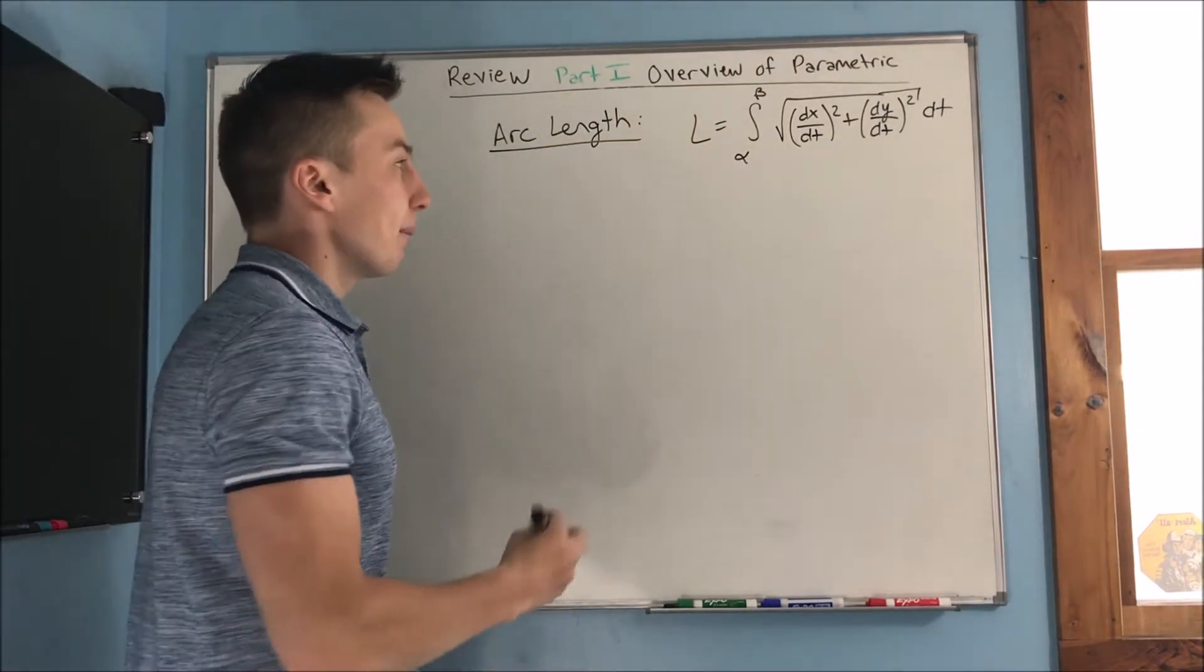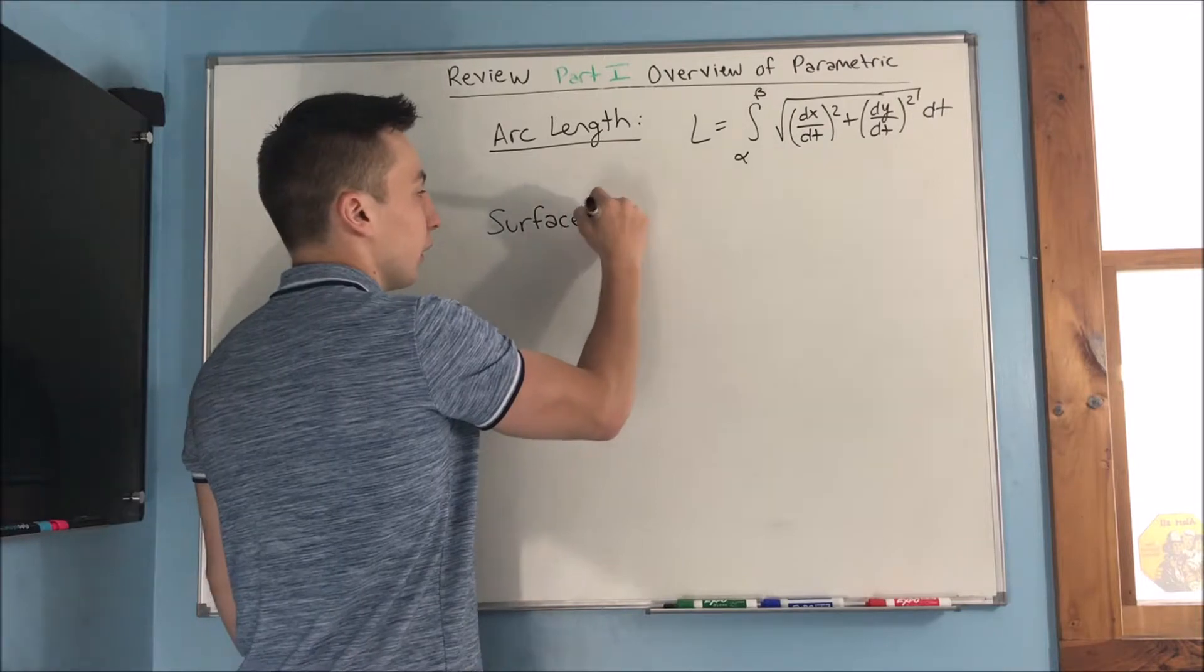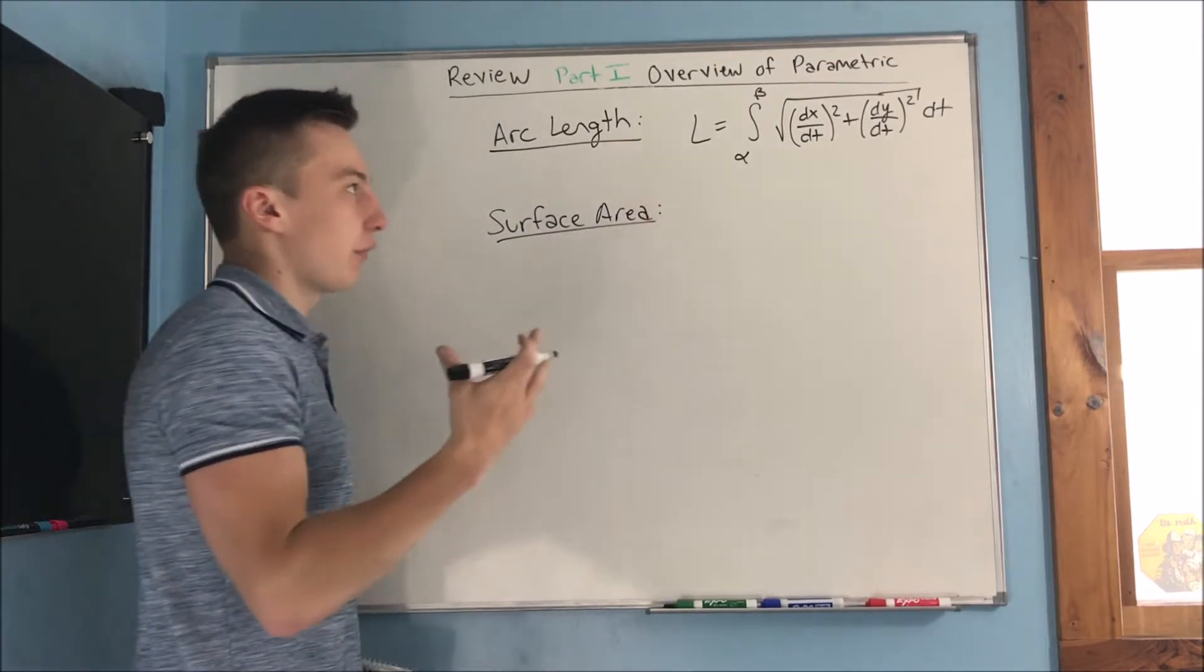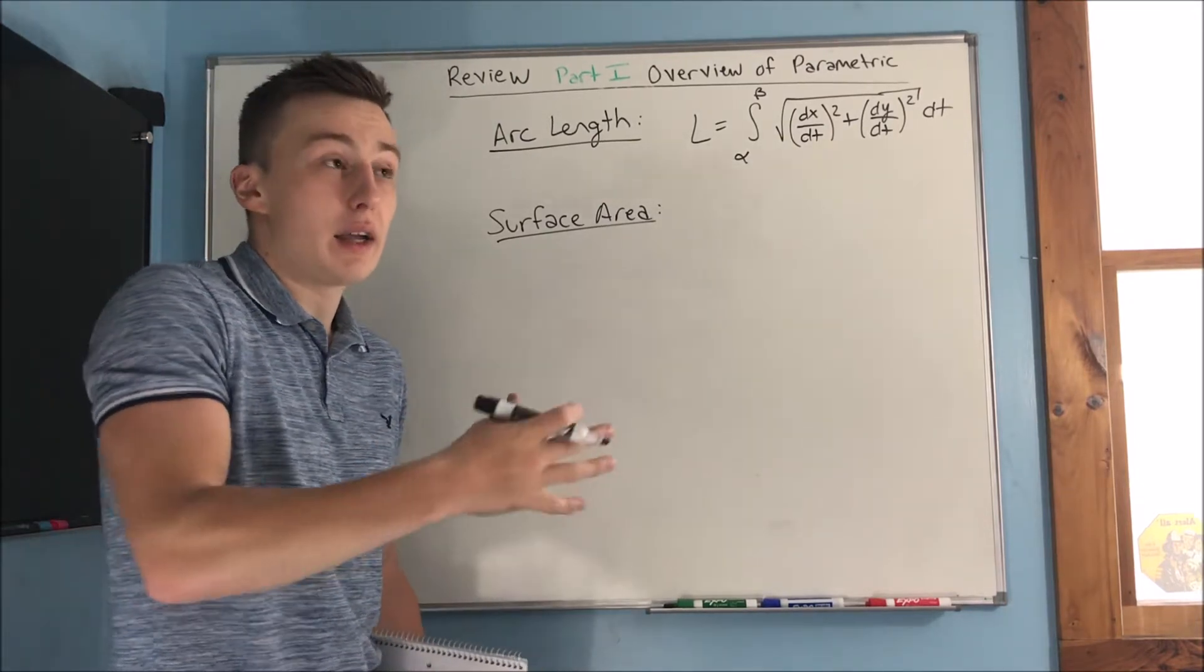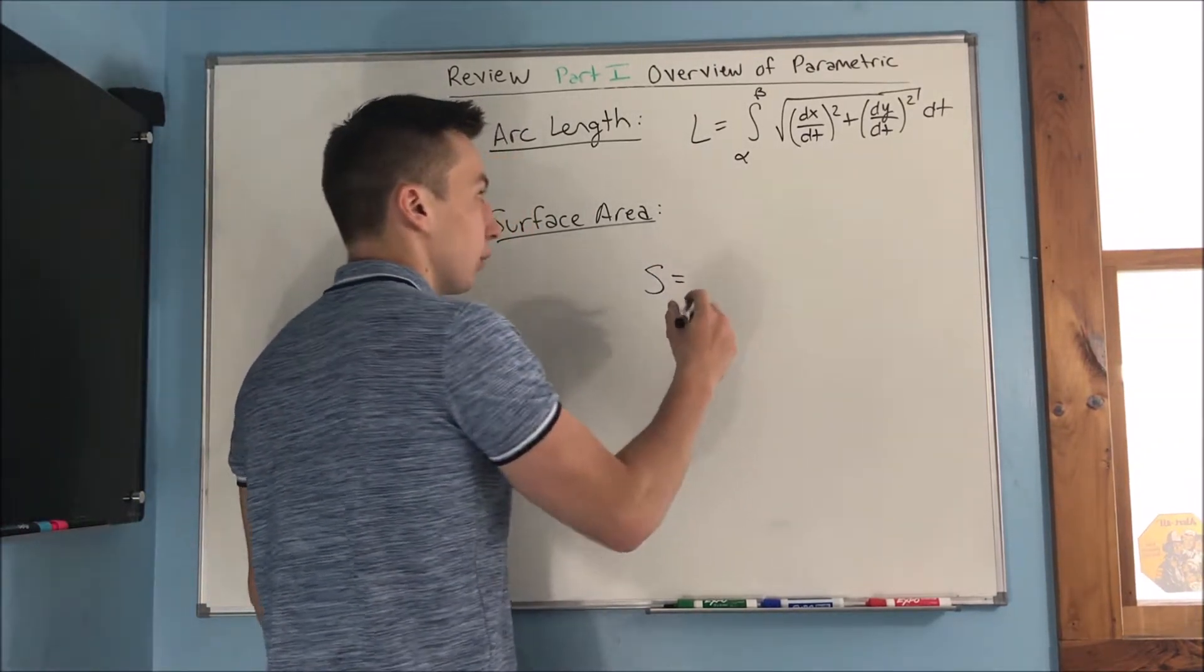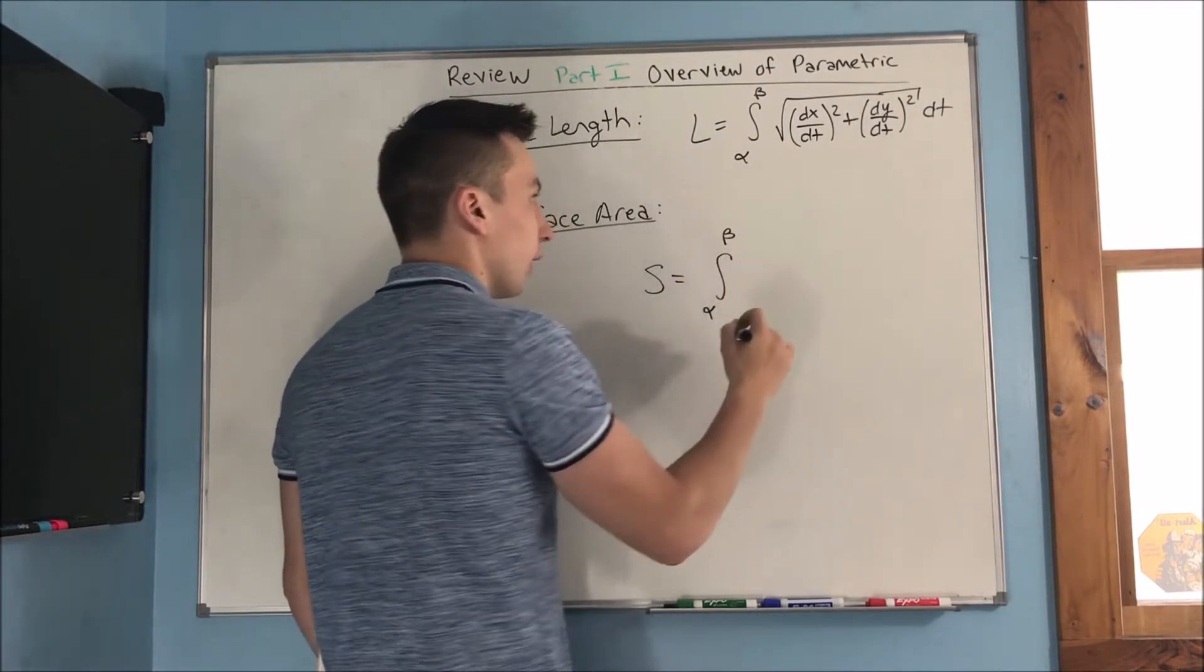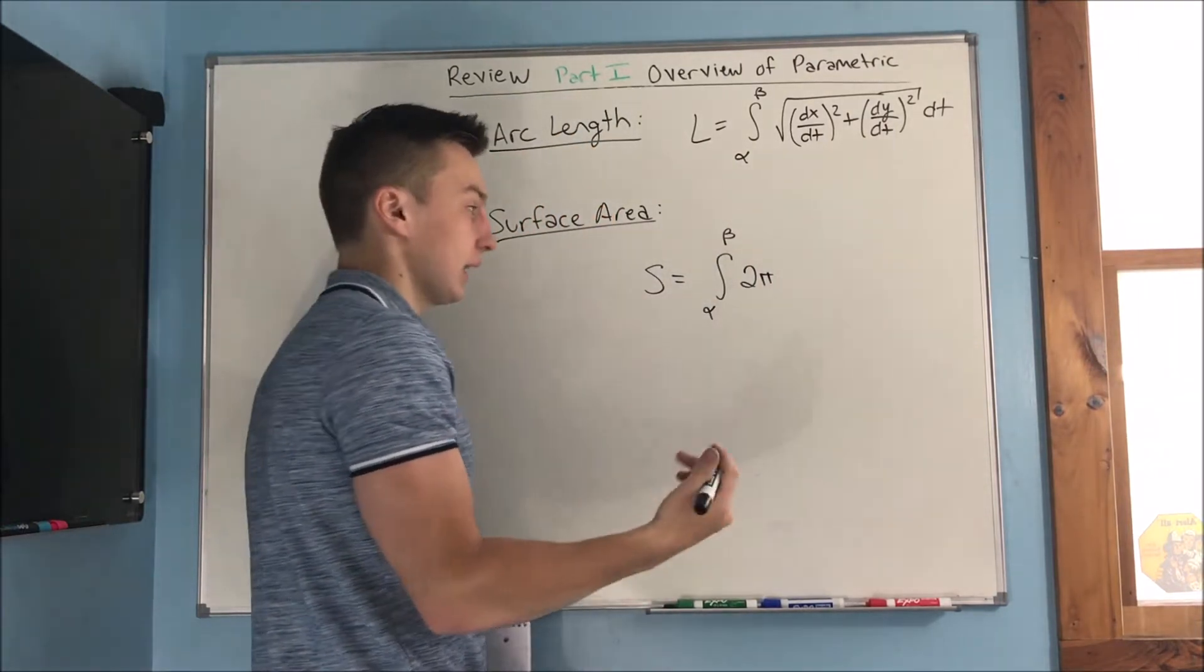And your surface area isn't that much different. I mean, you're just going to basically be putting a 2 pi, either y or x, depending on which axis you're rotating around. So you get surface area equals the integral from alpha to beta of 2 pi. Let's say we're rotating around the x axis.